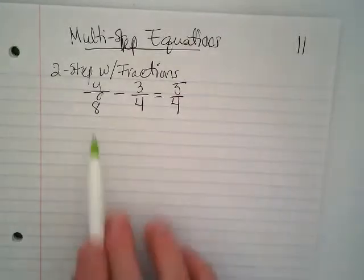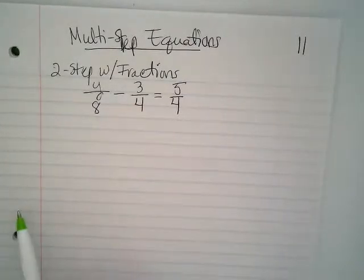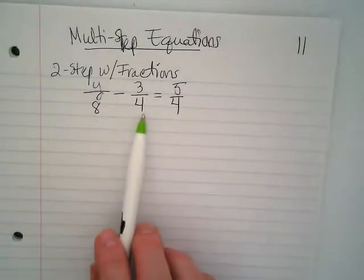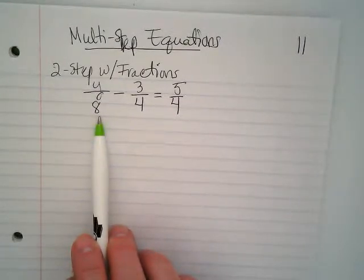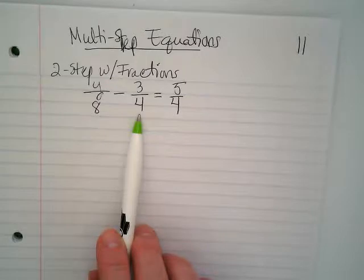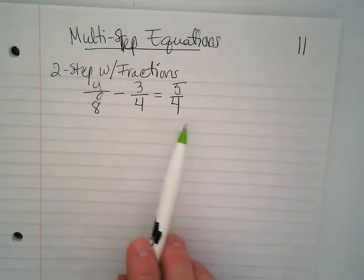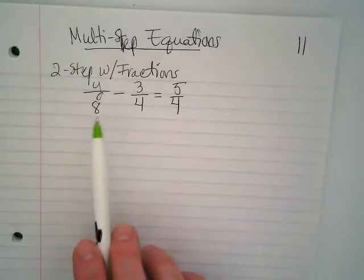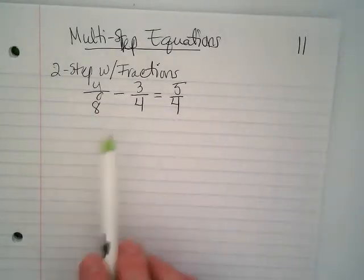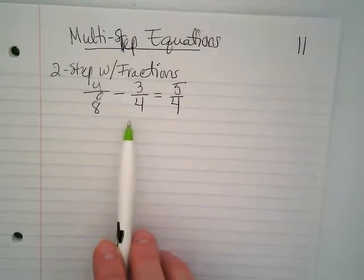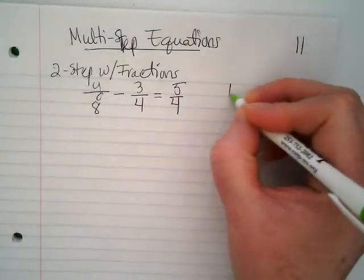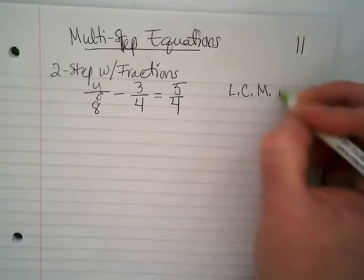We want to look for what the denominators have in common and multiply by the least common multiple. And that would be 8. Because 4 counts up with 4, 8, 12, 16, etc., right? What does 8 count up with? 8, 16. Both of them have 8 as the first one that they both have in common. We're not looking for factors of these when we're trying to clear the denominators. We're looking for the least common multiple. So if you want to write that on the side, least common multiple is 8.